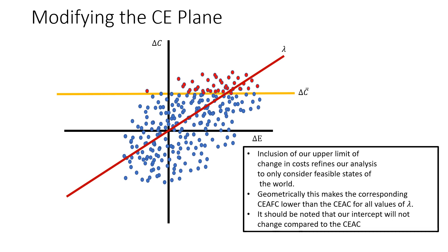To summarize, the inclusion of our upper limit delta c bar, which is the change in costs, refines our analysis to only consider feasible states of the world. Geometrically this makes the corresponding CAFC lower than the SEAC for all values lambda. It should be noted that our intercept will not change compared to that of the SEAC.